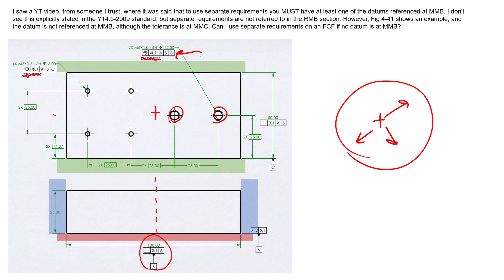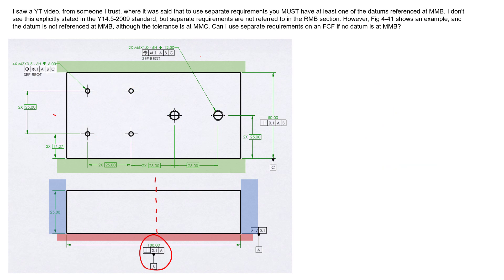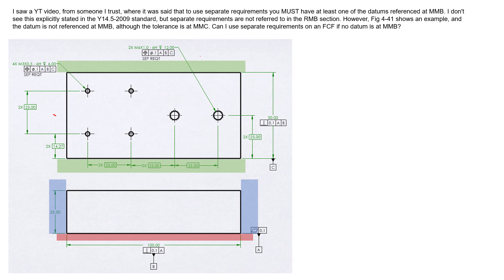Both feature control frames reference A, B, C, defining true position in all three translations and three rotations. We fully define each hole location with respect to the same zero-zero-zero. If we control all six of these holes back to that zero-zero-zero created by our mid-planes, we are simultaneously controlling them to the same simulators and the same spot. Even if we put separate requirements on here, we're still controlling them to the same zero-zero-zero.